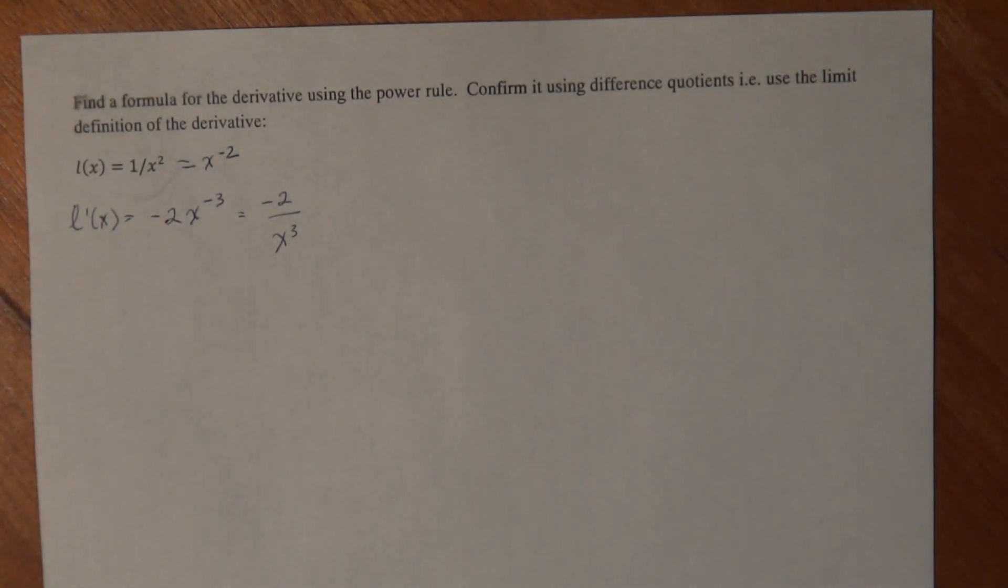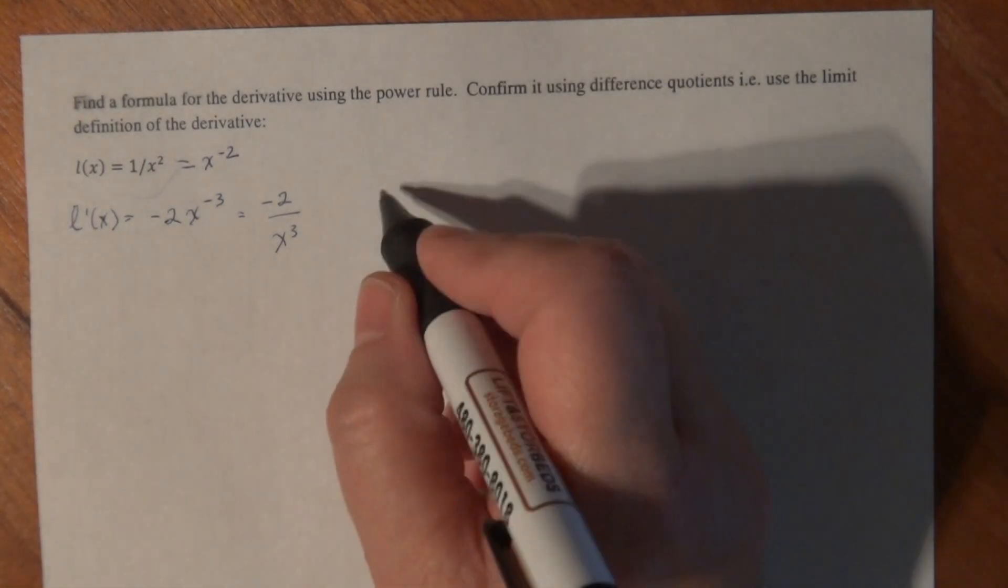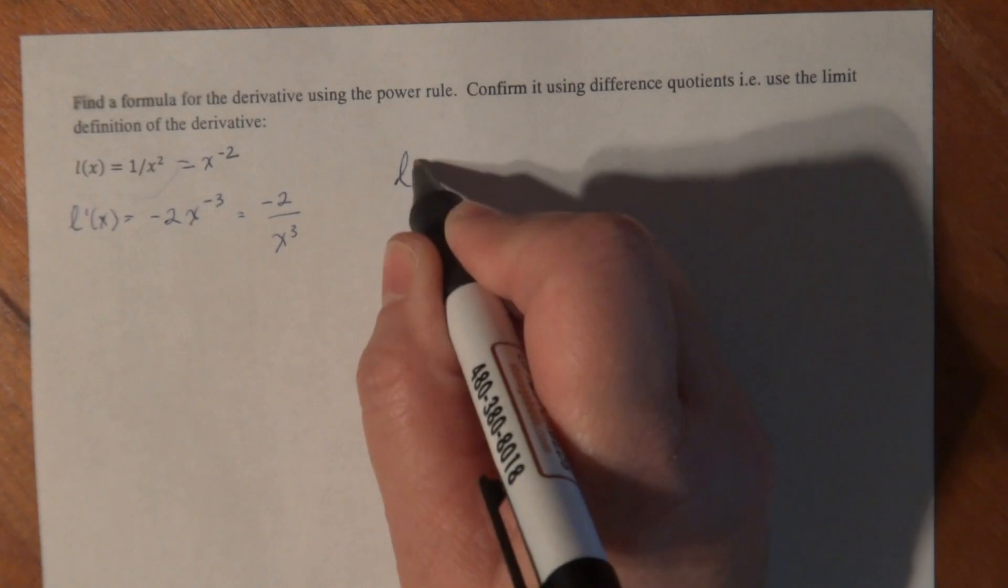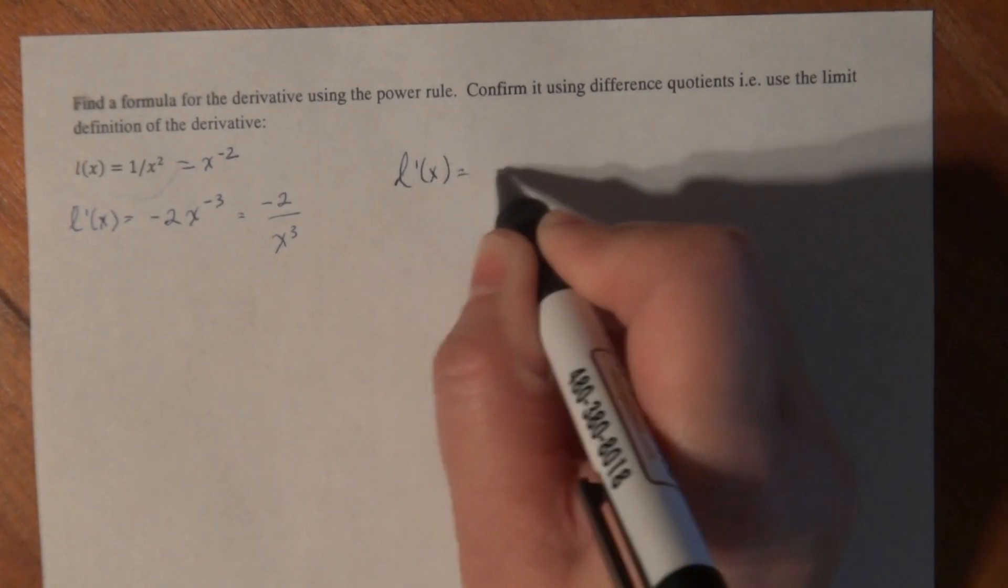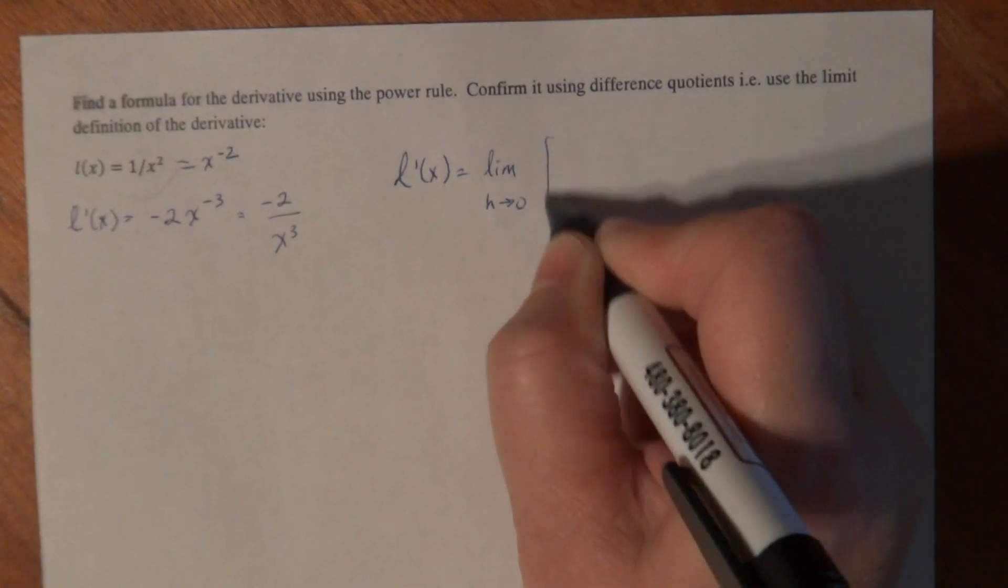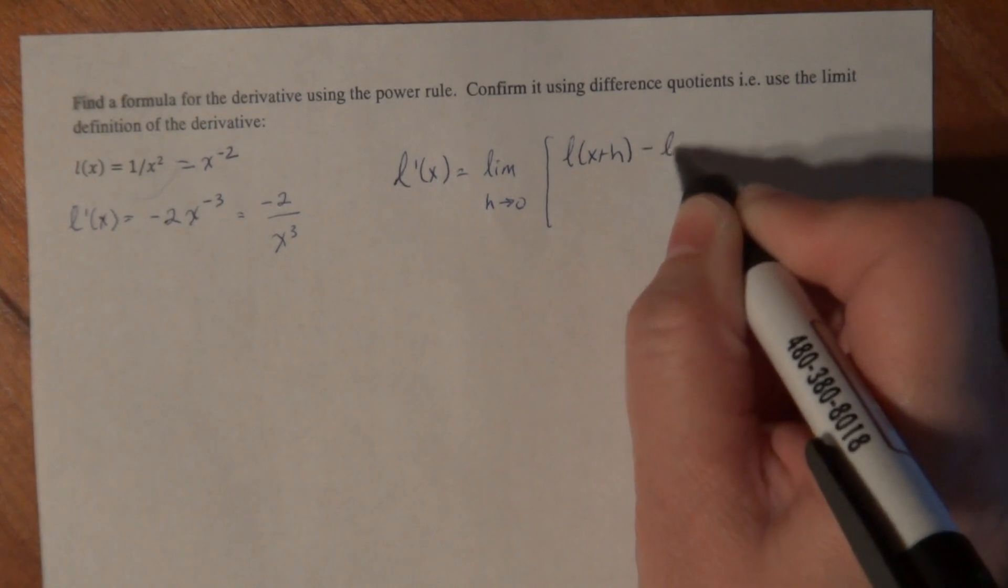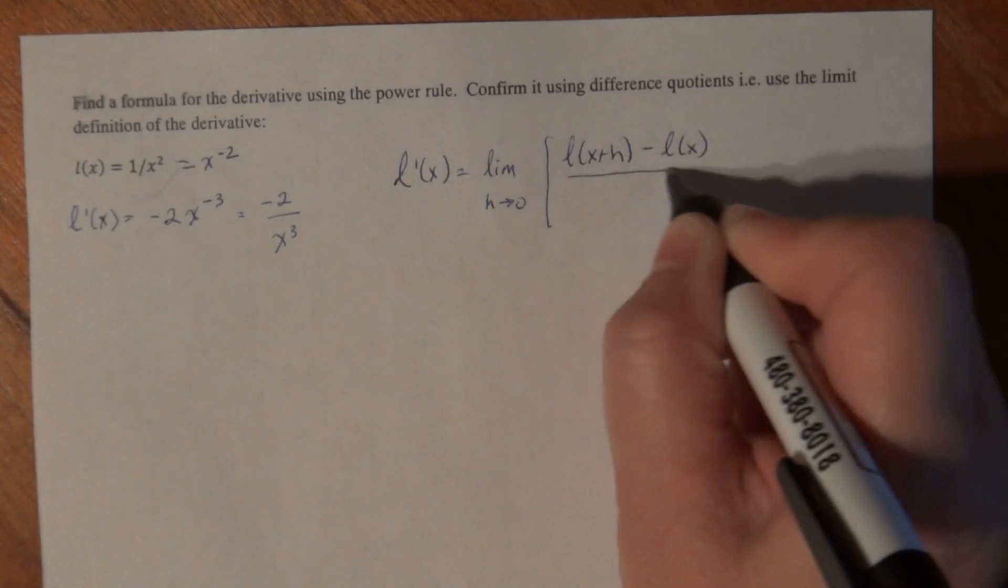And now when we use the limit definition of a derivative, we know what our answer is because it's right there. All right, now we're going to use the limit definition. L prime of x is equal to the limit as h goes to 0 of L of x plus h minus L of x divided by h.